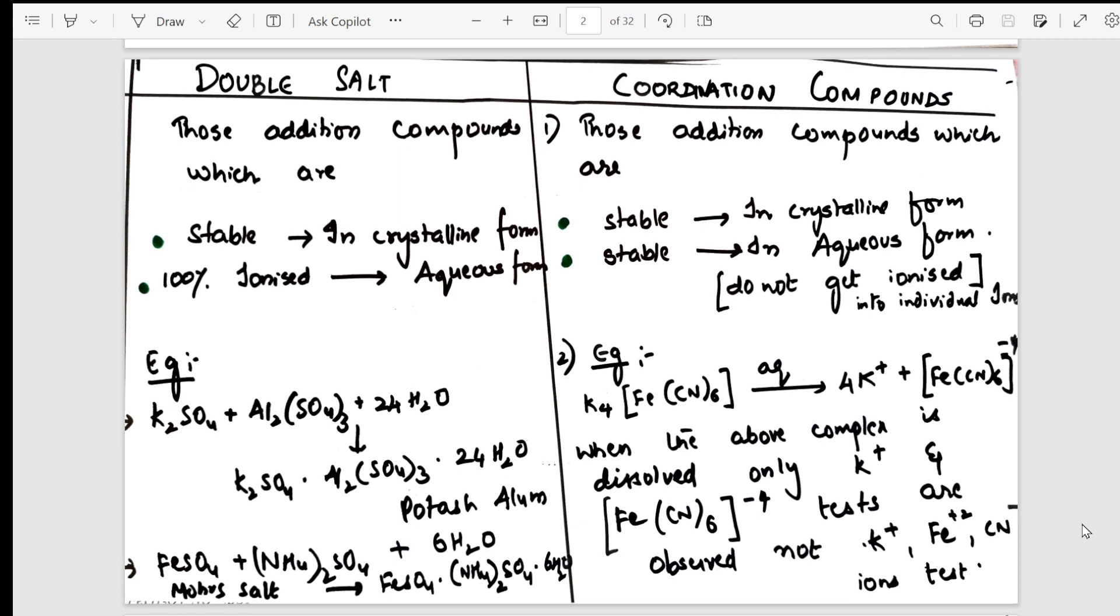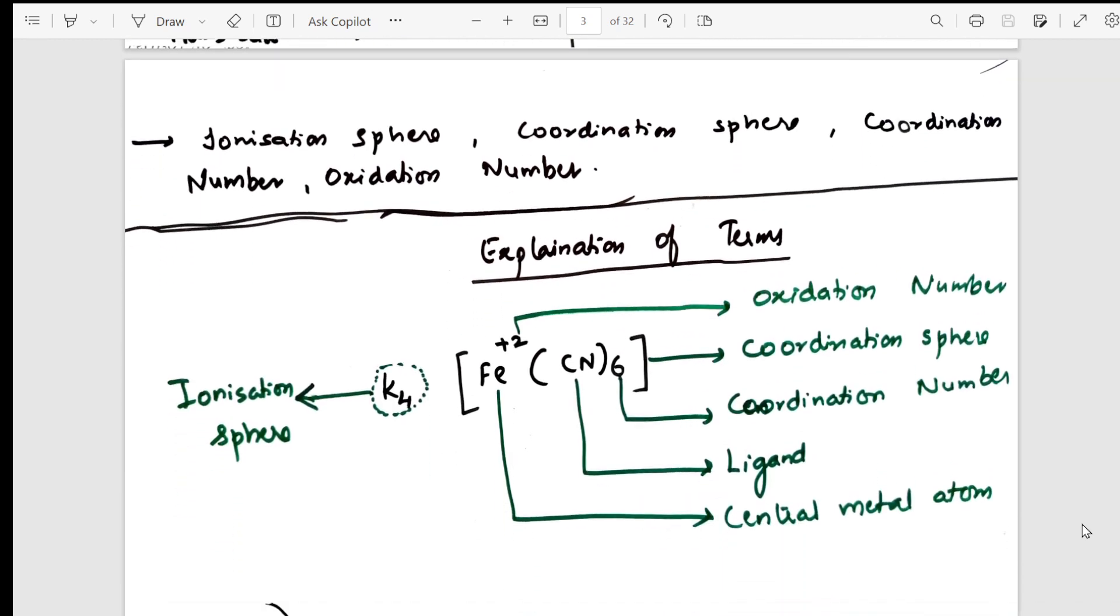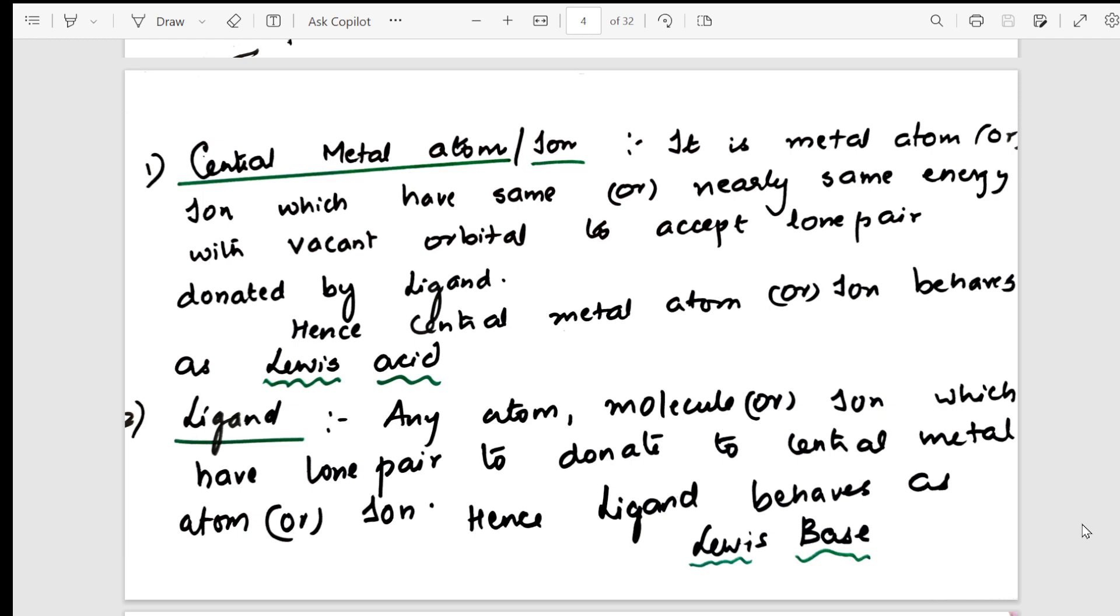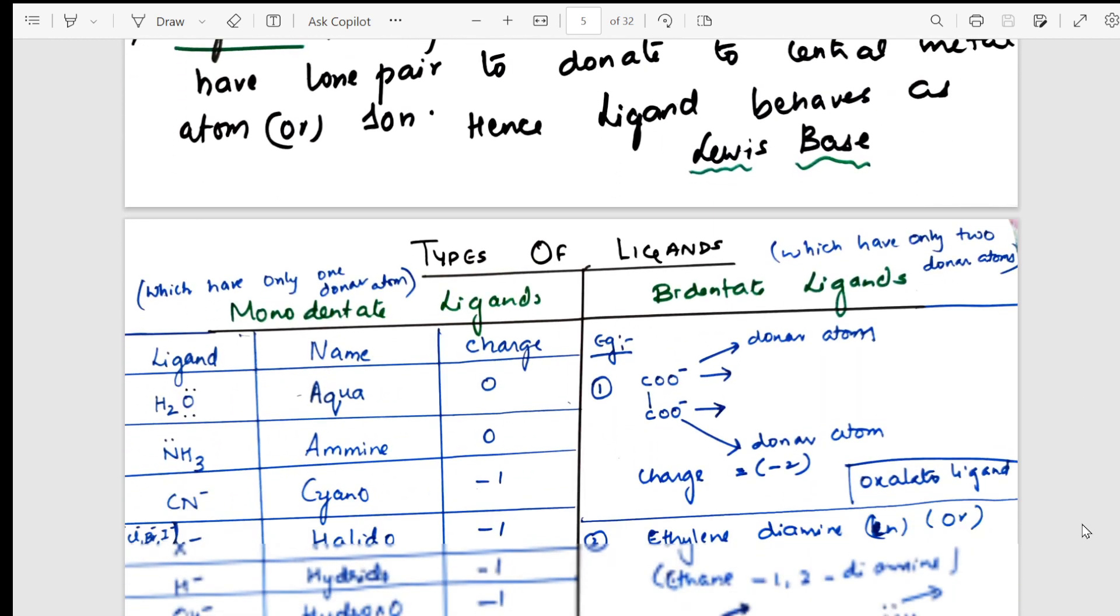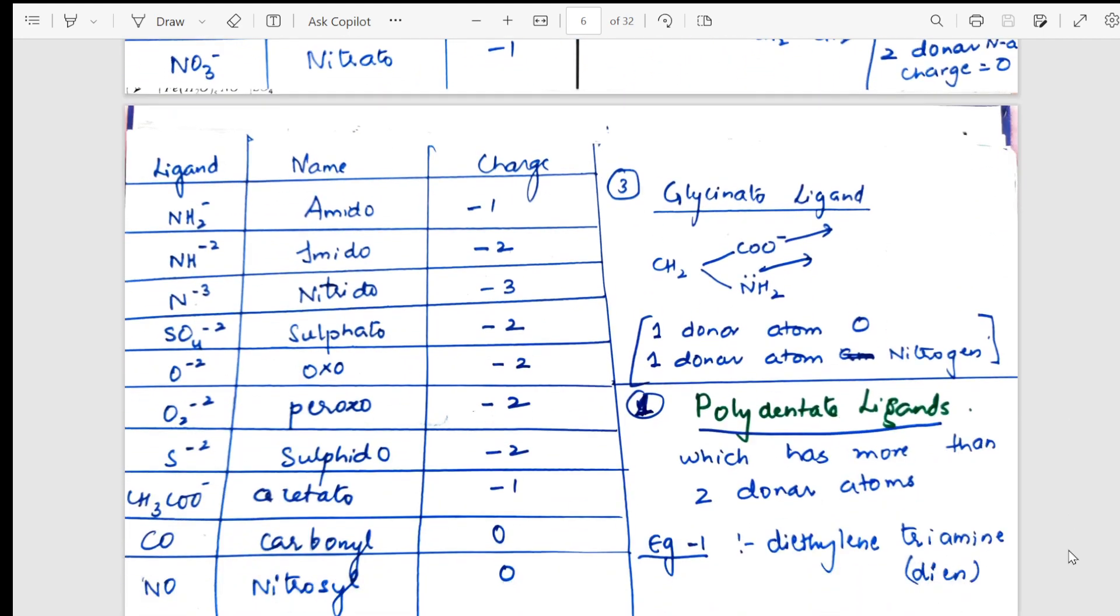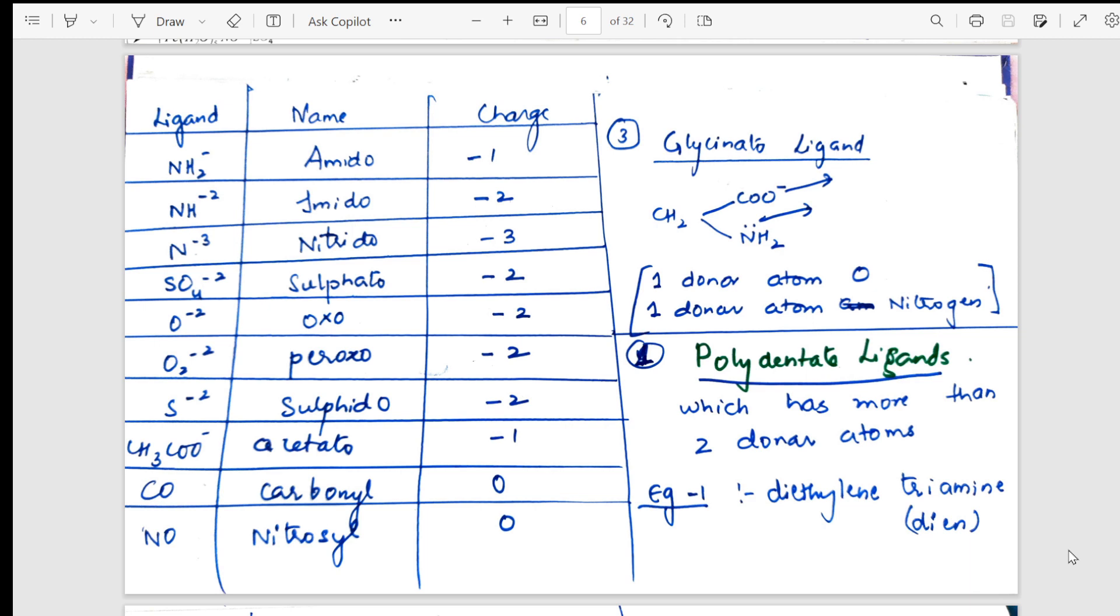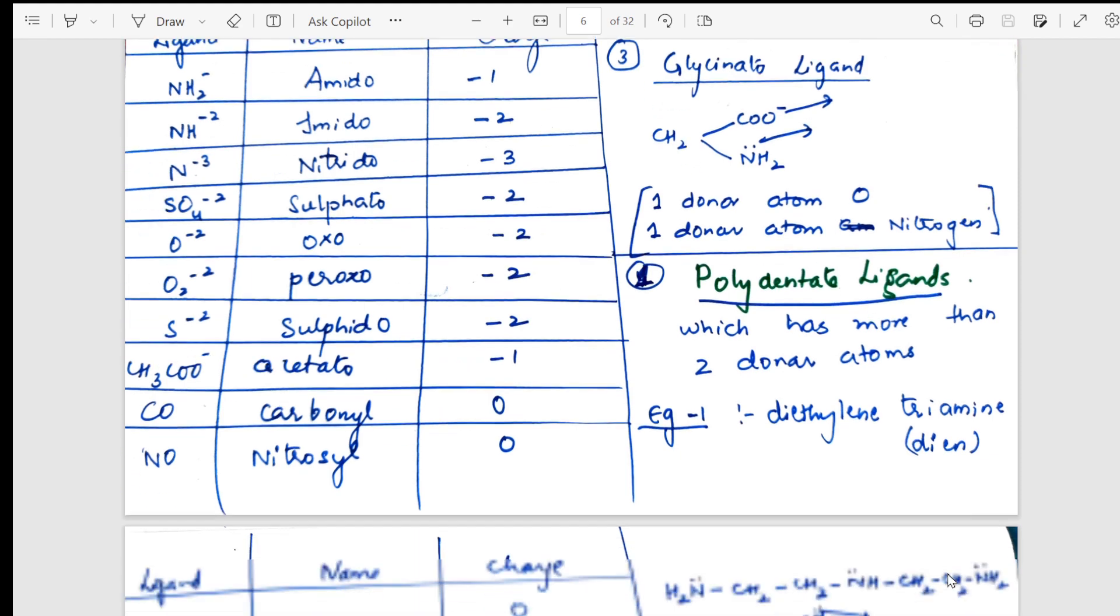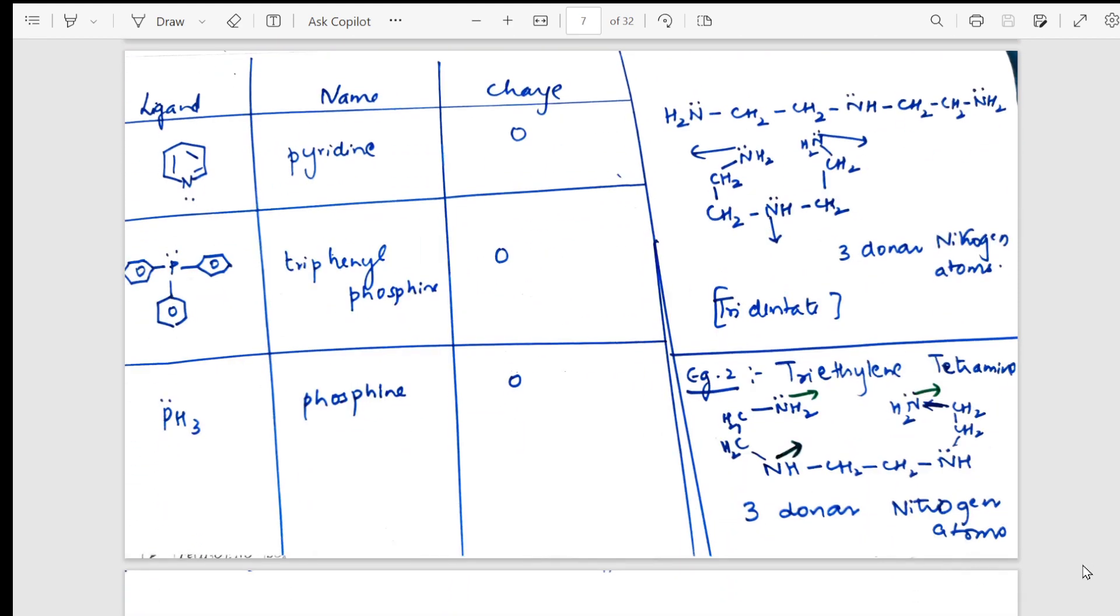I request you to watch the one shot videos where I've explained every line of NCERT. Then I've started explaining the different terminology which is there in coordination compounds, the definitions and everything. Then I have taken examples explaining what is central metal ion, ligand. From there we have gone to the types of ligands - monodentate, bidentate, polydentate, gradually looking into the charges present on these ligands.